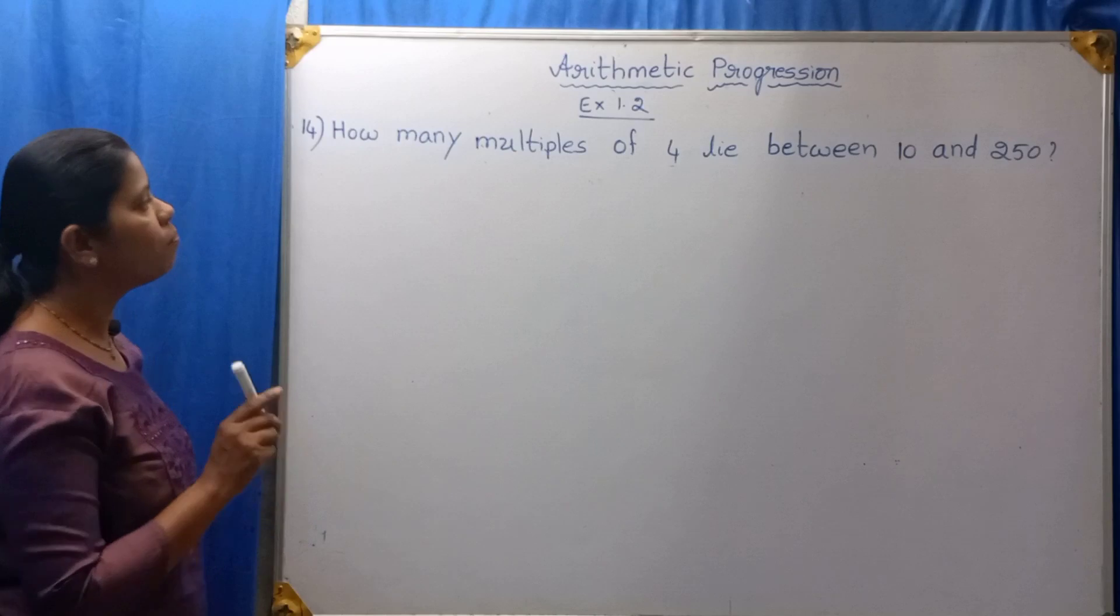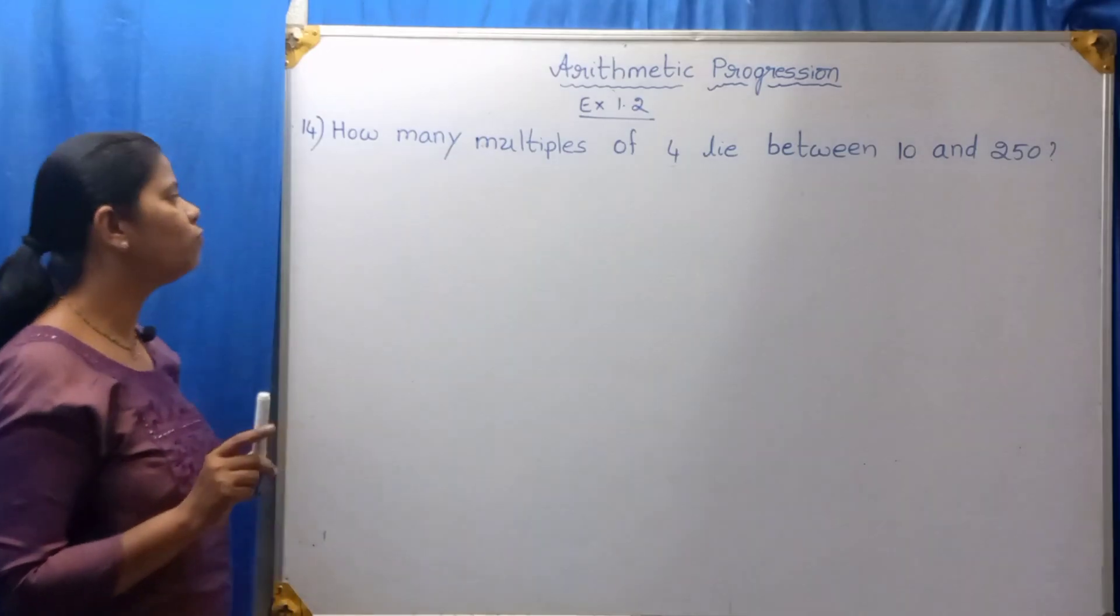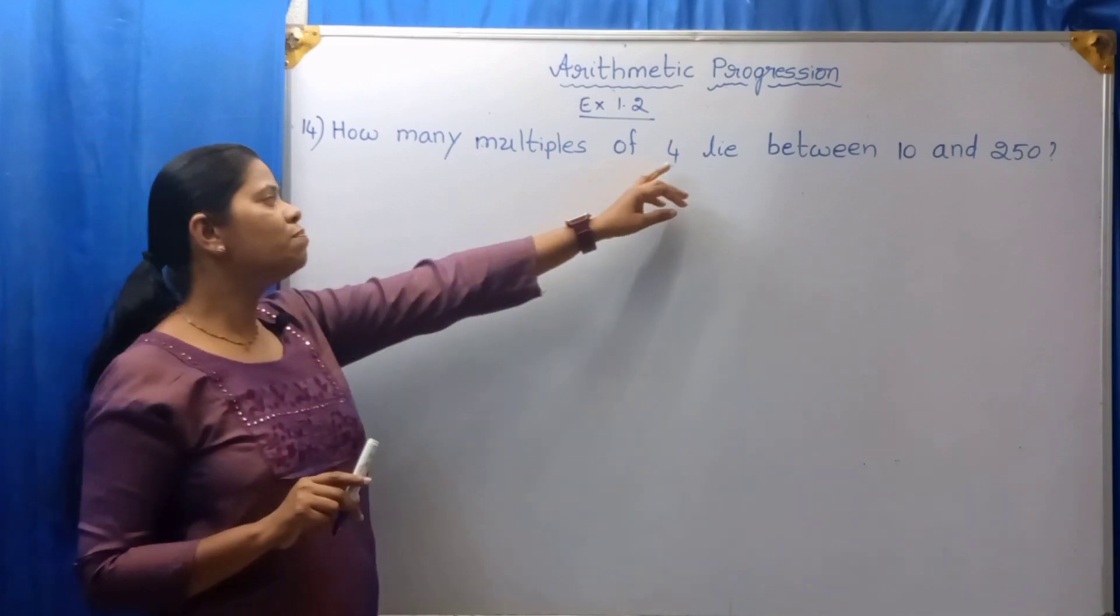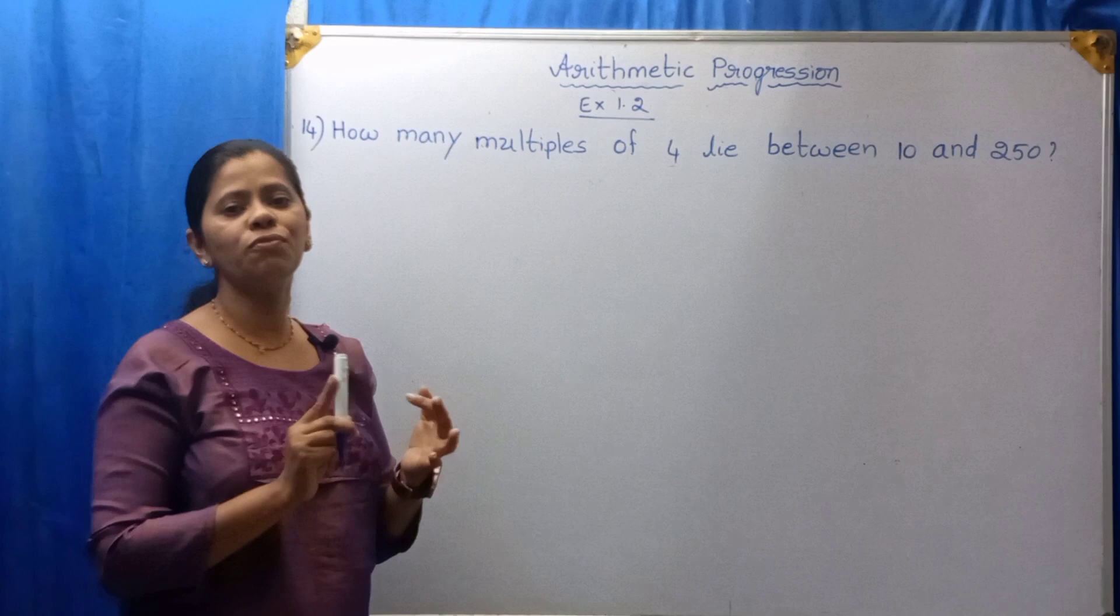We have to find the multiples of 4 which lie between 10 and 250. We know the multiples of 4: 4 ones are 4, 4 twos are 8, 4 threes are 12.